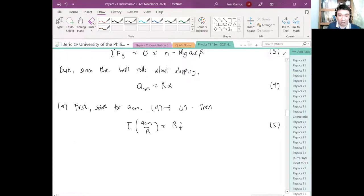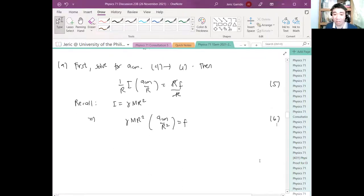Then I have I quantity ACM over R equals RF. This is equation 5. But what is I? Recall the moment of inertia is gamma MR squared, implying that gamma MR squared times ACM over R equals... divide both sides by 1 over R. So this cancels and I have R squared here. Therefore this equals F, equation 6.